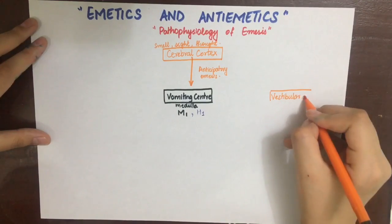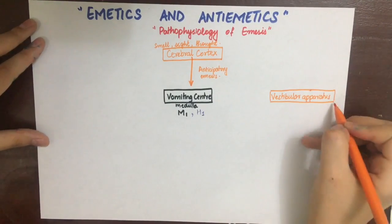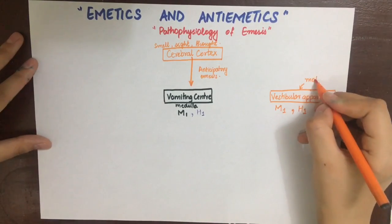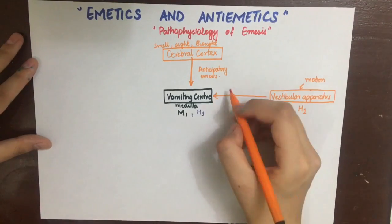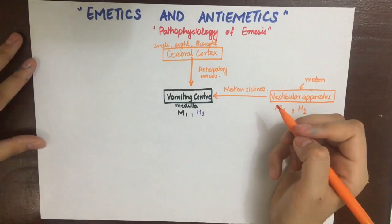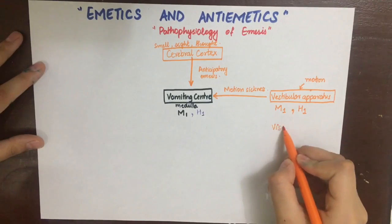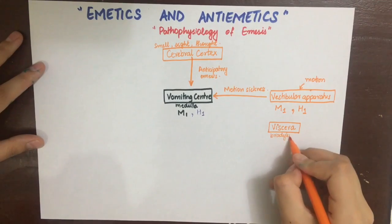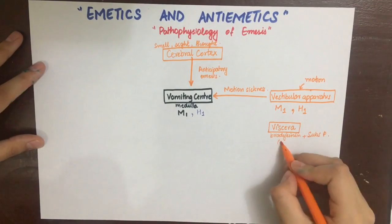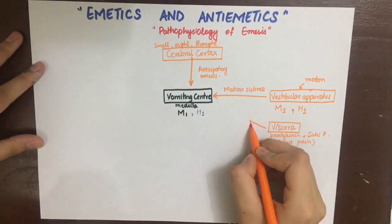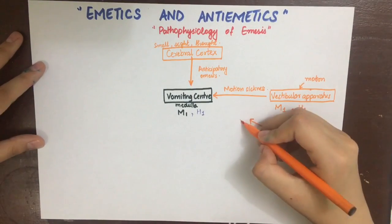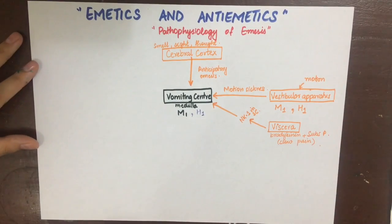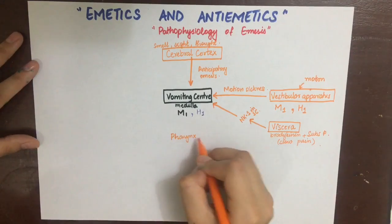The second way the vomiting center can be stimulated is by motion, which stimulates the vestibular nuclei having M1 and H1 receptors, causing motion sickness. Another way is by visceral pain, which is usually a slow, dull aching pain associated with vomiting. Bradykinins and substance P released in pain-producing areas stimulate neurokinin receptors in the spinal cord, which in turn stimulate the vomiting center.